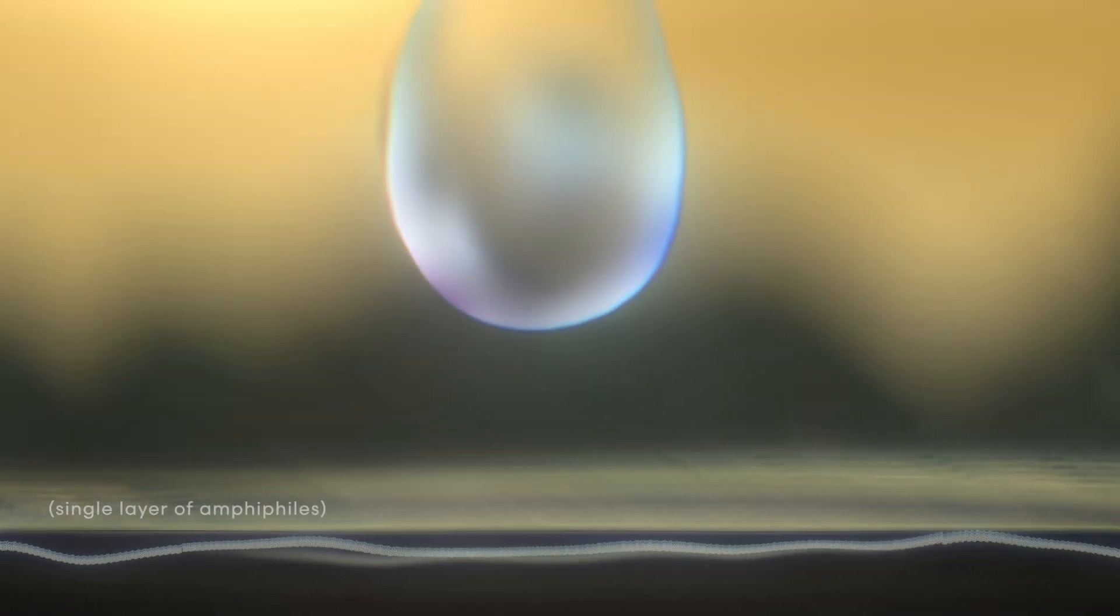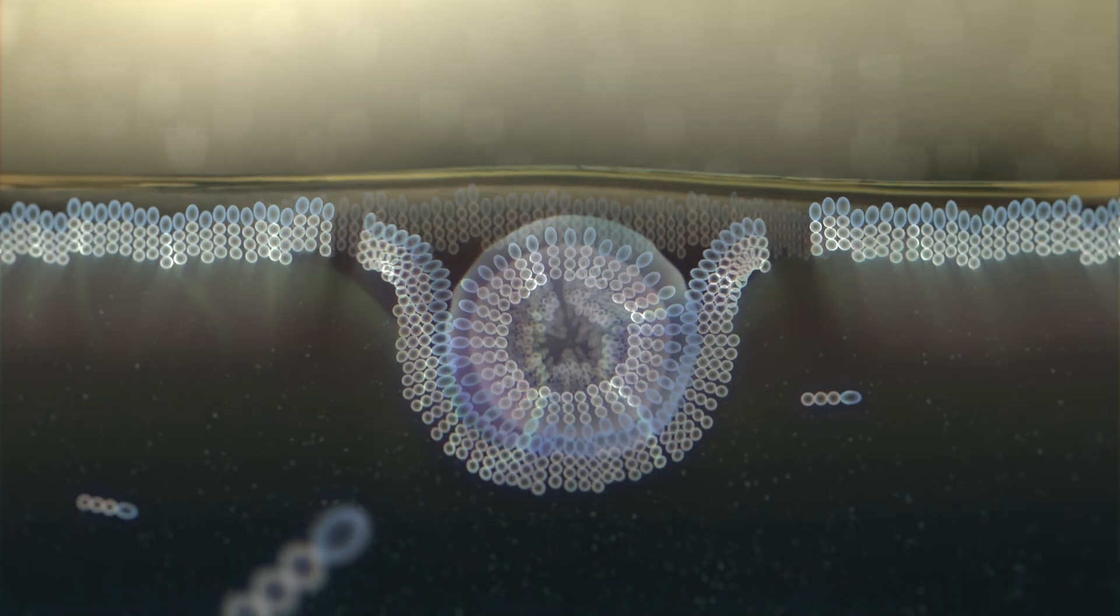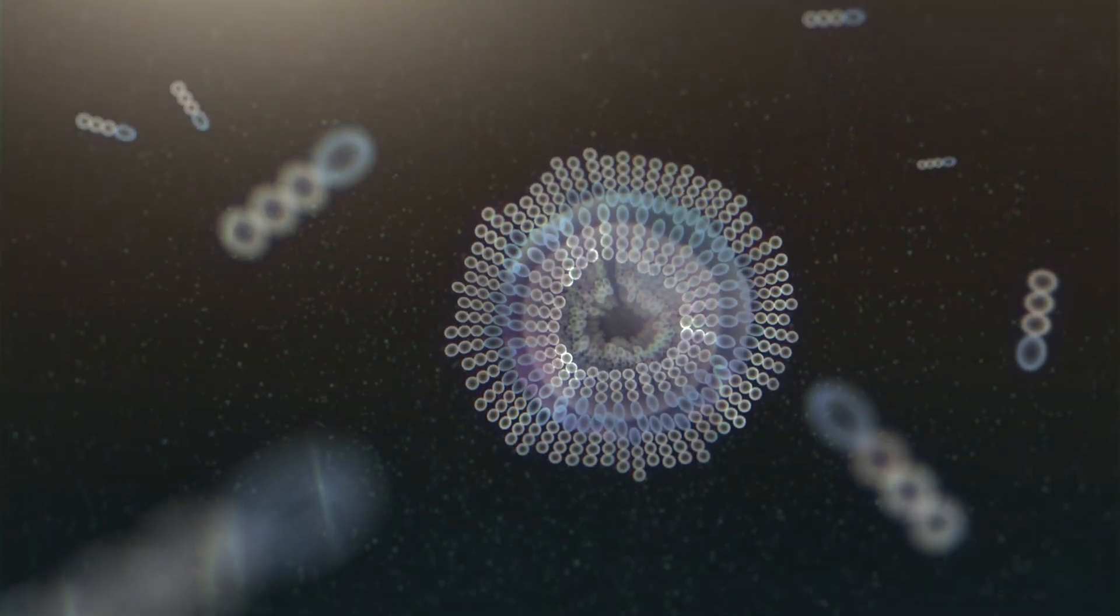Later, strong storms pelt the lake with large raindrops, throwing up a spray of methane droplets coated in a single layer of amphiphiles. As the droplets fall and sink through the lake's filmy surface, they receive a second coating. And voila! Vesicles!